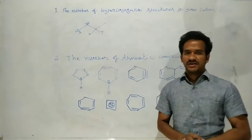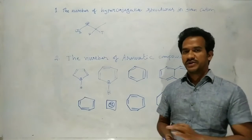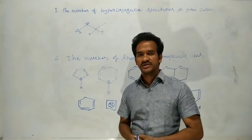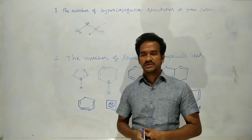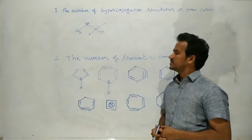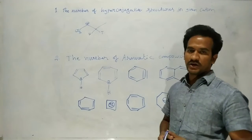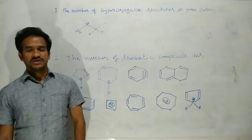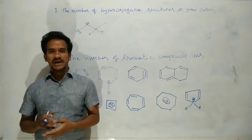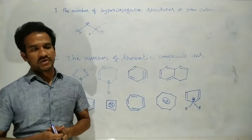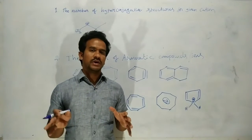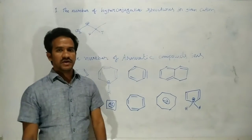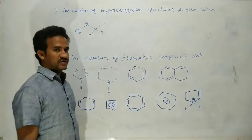Hello students, good evening. Let us continue discussion of some important questions from general organic chemistry. It is a very important topic for different competitive examinations. Let us discuss two numerical questions. The first is the number of hyperconjugated structures for the given compound. Hyperconjugation — delocalization of the alpha C-H sigma bonding electrons — is observed in carbocations, free radicals, and alkenes.